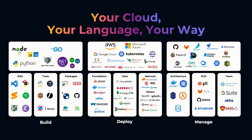The next part is the deploy area. Pulumi supports a huge variety of different providers, starting with the major cloud providers and extending to different SaaS services. The last part is the manage area. Pulumi integrates very well with your existing CI/CD infrastructure — you can use Jenkins, GitHub Actions, or even Kubernetes to execute Pulumi programs. Pulumi also integrates with existing Git systems such as GitHub, GitLab, and Bitbucket. It's very easy to integrate Pulumi into your existing infrastructure.